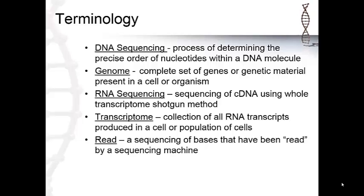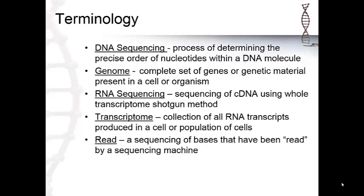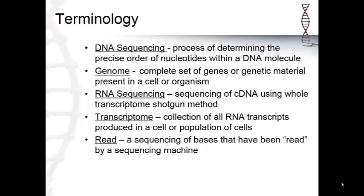RNA sequencing is the sequencing of cDNA using the whole transcriptome shotgun method. The transcriptome is a collection of all RNA transcripts produced in a cell or population of cells. A read is a sequencing of bases that have been read by a sequencing machine.